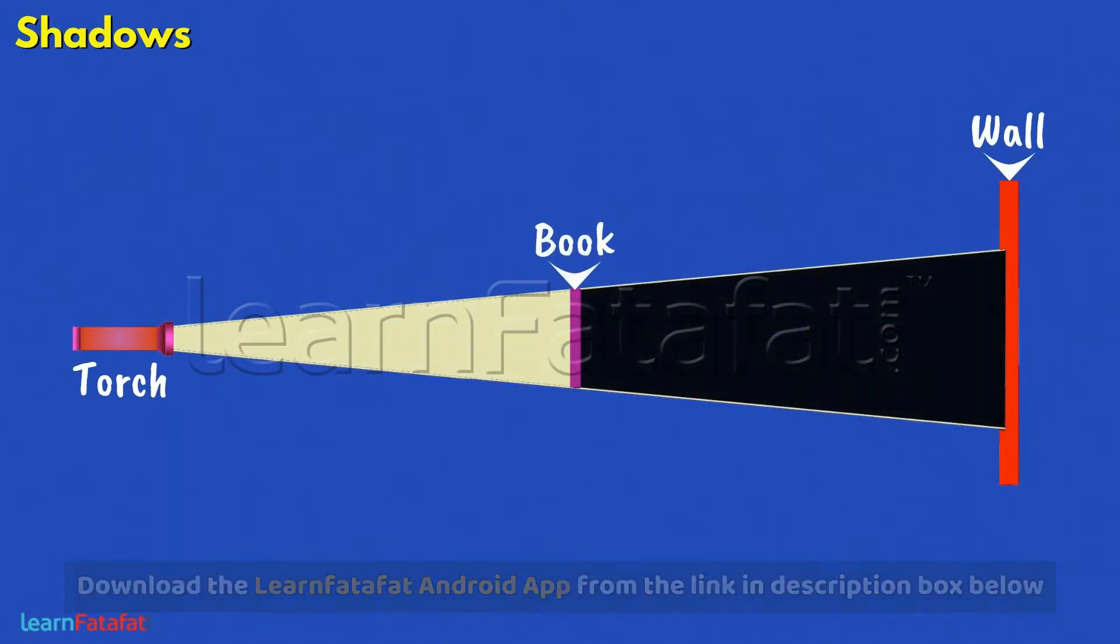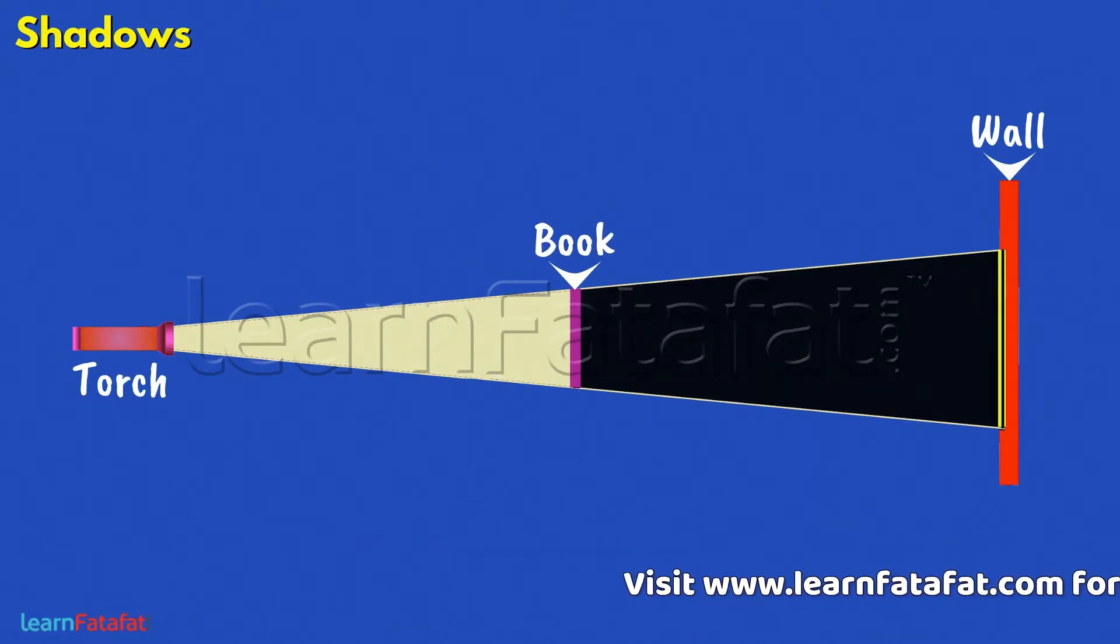If we keep a book between the wall and the torch, then we can see a shape similar to the book formed on the wall.